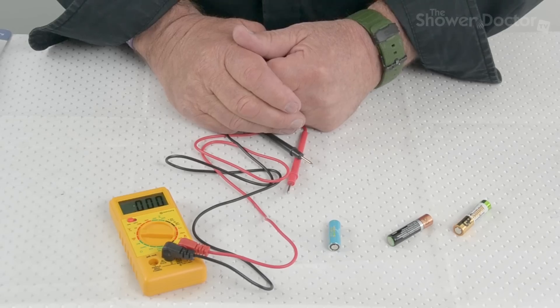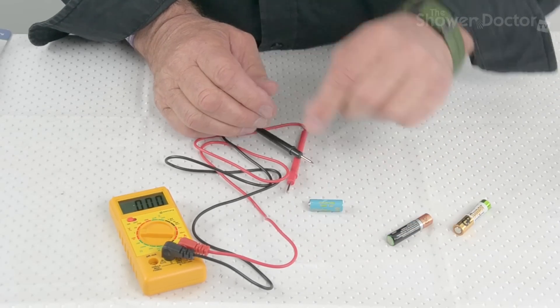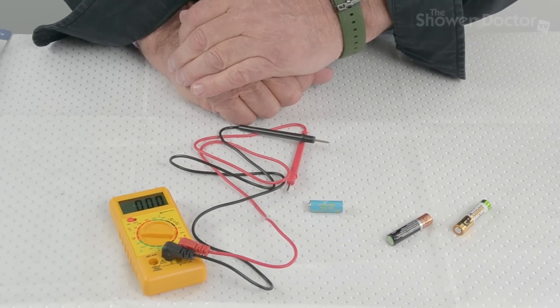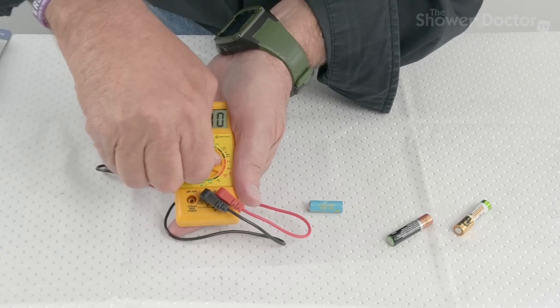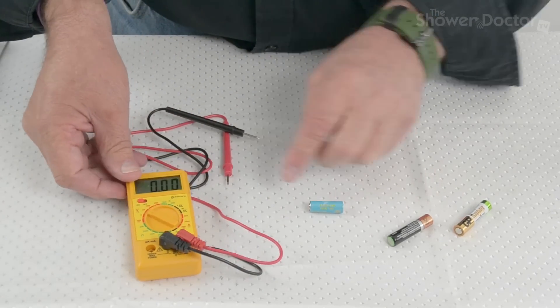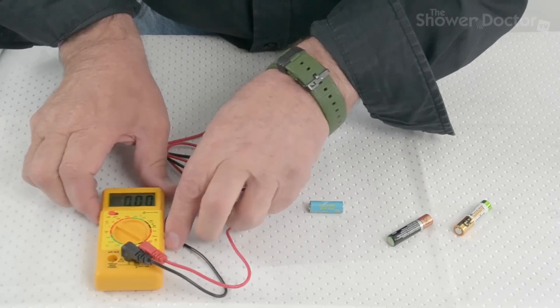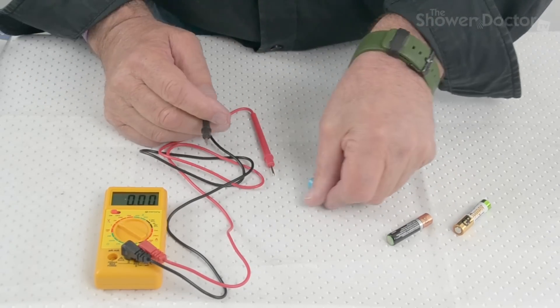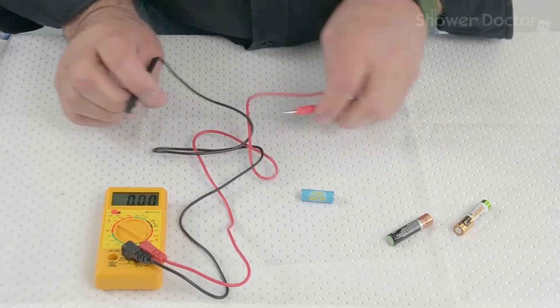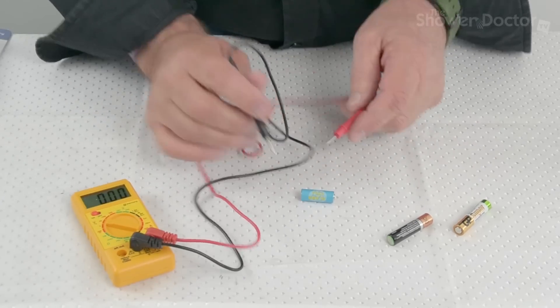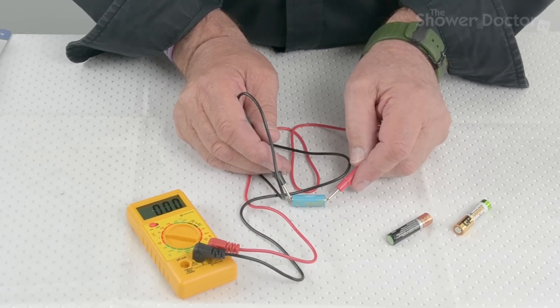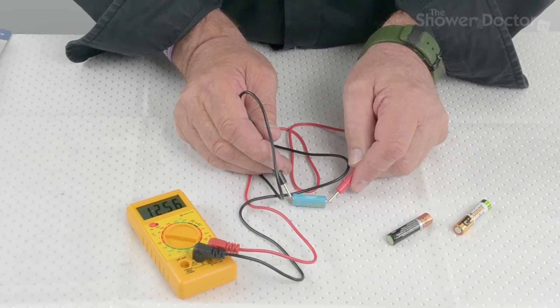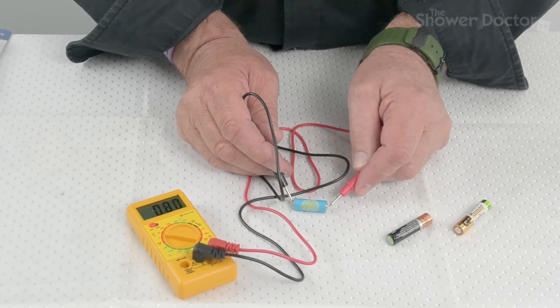The other thing that we have is we've got another, one of these sort of small type camera batteries here. And so to check this, we need to set this to 20 volts, 20 volts, because this is supposed to be a 12-volt battery. So we'll check this again. Turn around that way to make it easier. Oops. And so there we go. And as you can see, it's 12.5 volts. So that means that this battery is very good.